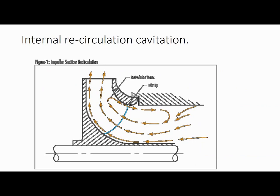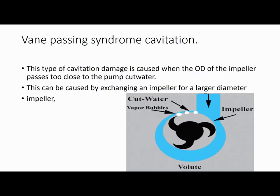Next is passing syndrome cavitation. This type of cavitation damage is caused when the OD of the impeller passes too close to the pump cutwater. This can be caused by exchanging an impeller for a larger diameter impeller.